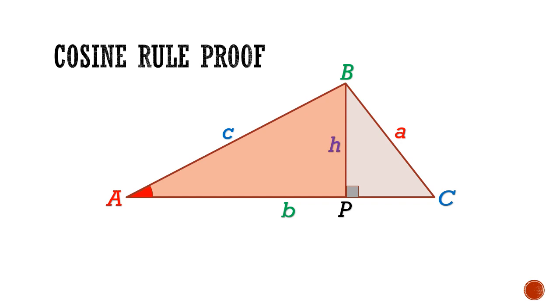Next, I'm going to let the length of AP equal x. That will divide the base of this triangle into two parts: AP equals x and PC equals b minus x. Now that I have all three sides of both right angled triangles, I can perform Pythagoras theorem.